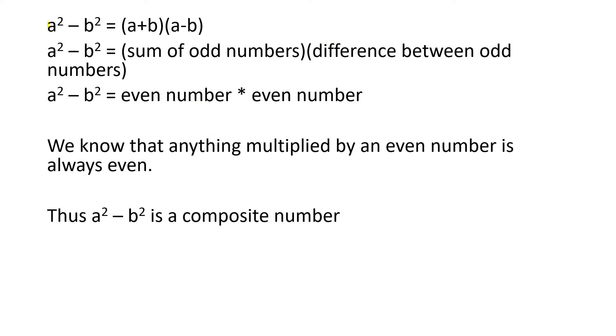A squared minus B squared we can simplify that to A plus B times A minus B. So, A plus B we have seen before, the sum of two odd numbers, and A minus B, the difference between the two odd numbers, are both even.